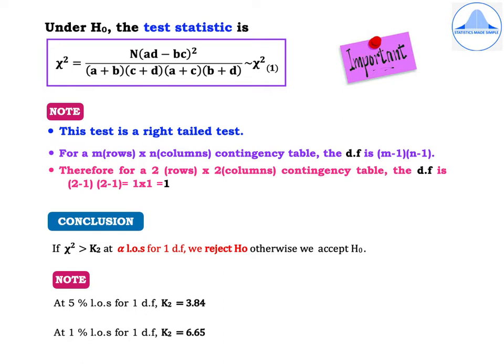Under H0, the test statistic is chi-square equal to N multiplied by (AD minus BC) squared, divided by the product of all the marginal totals: (A plus B) into (C plus D) into (A plus C) into (B plus D). This formula follows a chi-square distribution with one degree of freedom. Just like the chi-square test for goodness of fit, the chi-square test for independence of attributes is a right-tailed test.